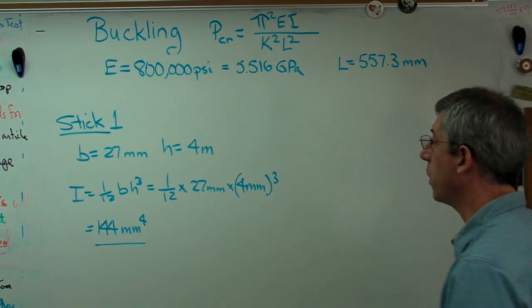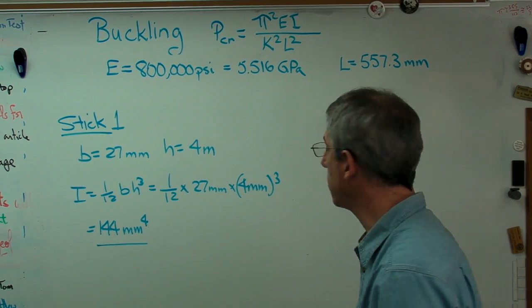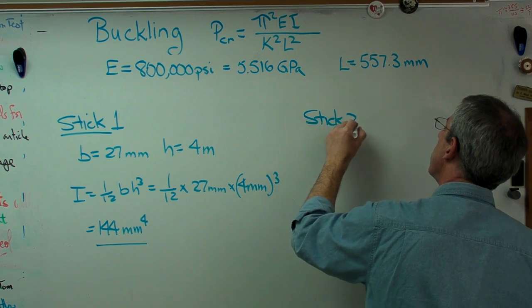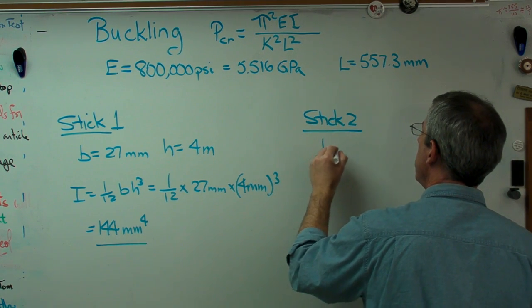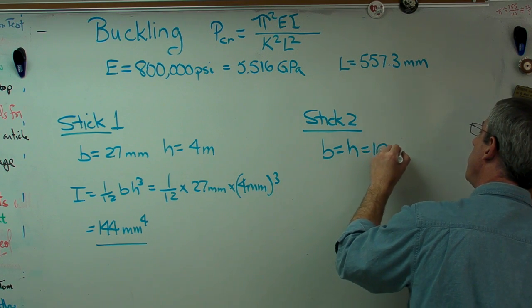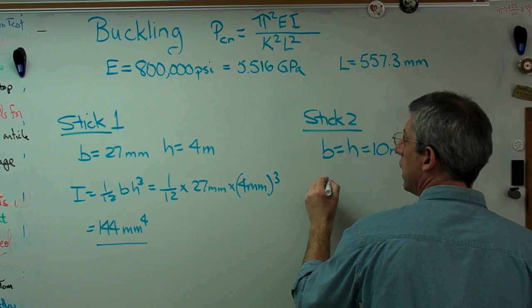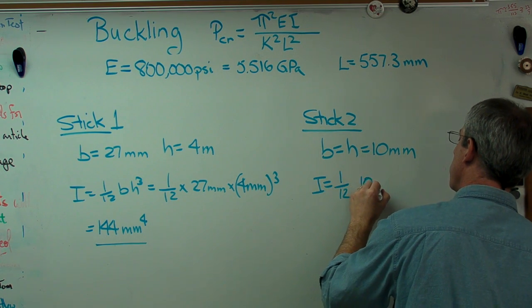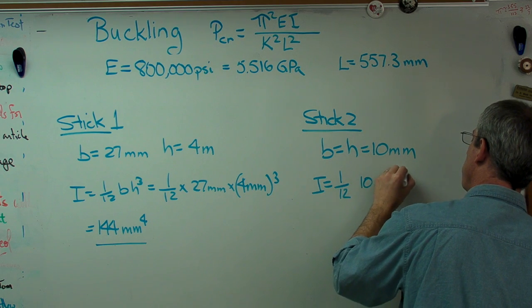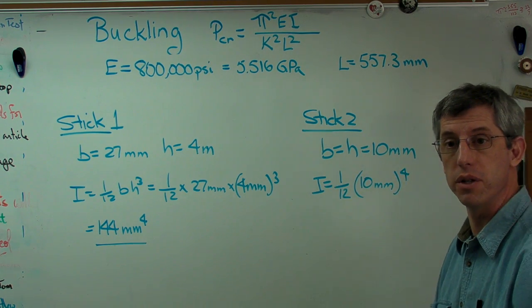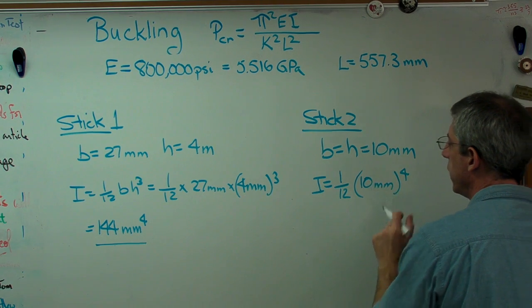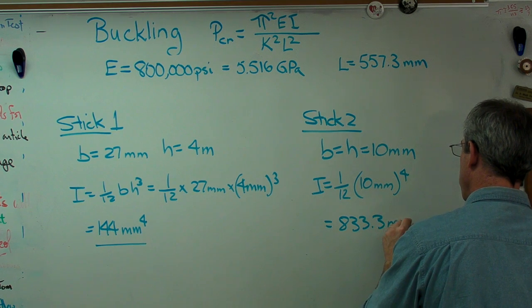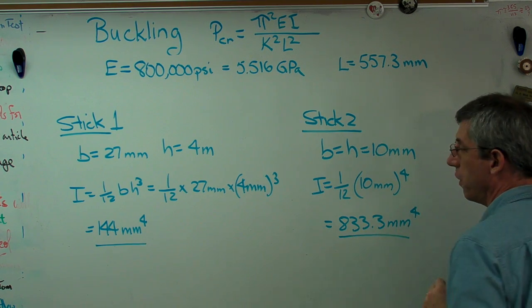Stick number two is the small square one. Again, about the same cross-sectional area, or as close as I could get with my power sander downstairs in my lab. Okay, B equals H. They're both 10 millimeters now. And so I is 1/12. Now it's just 10 millimeters to the fourth is the short way to write this. It's 10 millimeters times 10 millimeters to the third, so 10 millimeters to the fourth. And that's 833.3 millimeters to the fourth.